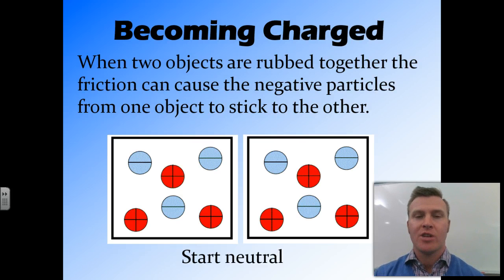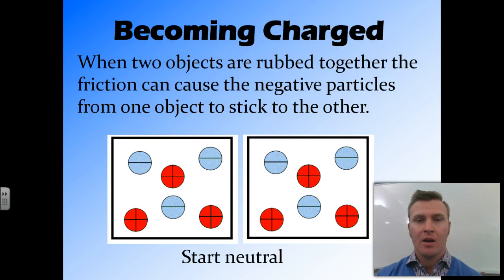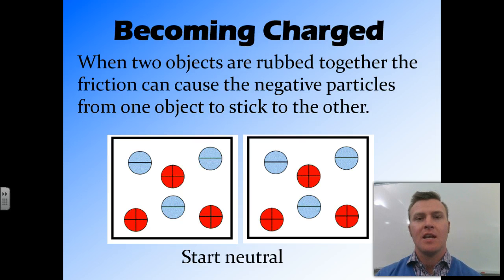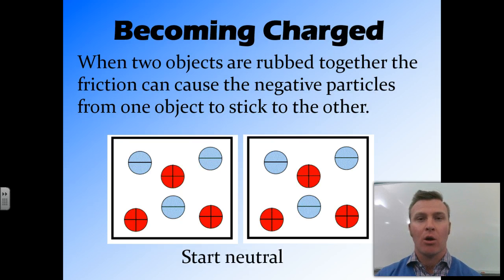Next we're going to look at how objects end up becoming charged and having different amounts of positive and negatively charged particles in them. When two objects are rubbed against each other, the friction from the rubbing causes the negative particles to jump from one object to another, because the negative particles are able to move around between objects.